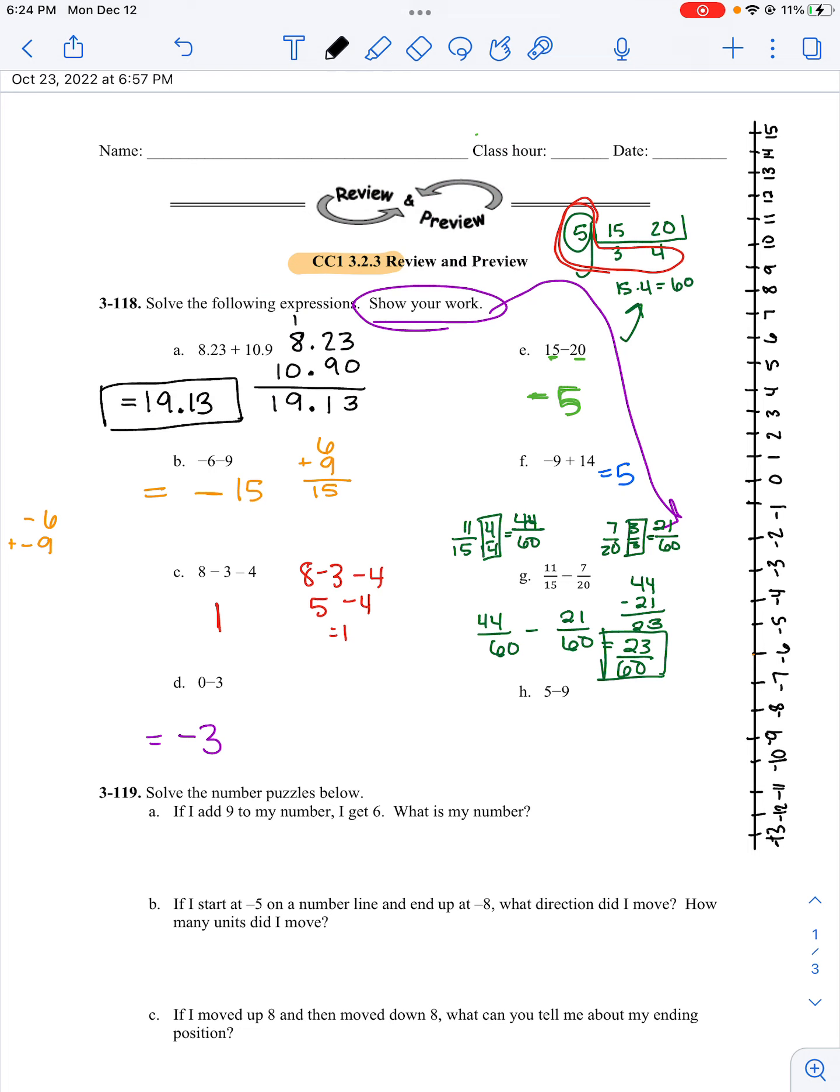Last but not least, start at 5, subtract 9. 1, 2, 3, 4, 5, 6, 7, 8, 9. It's negative 4.